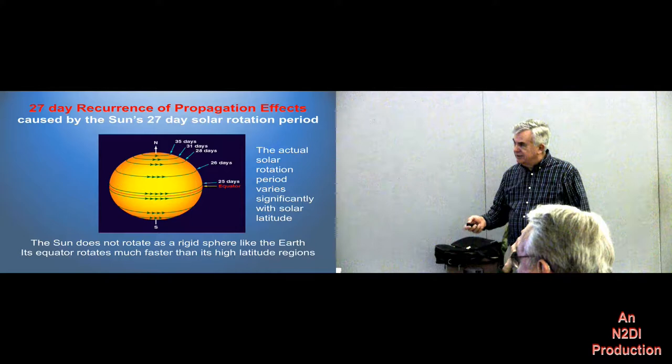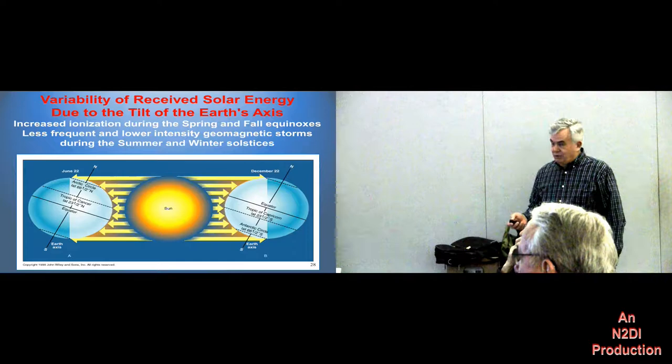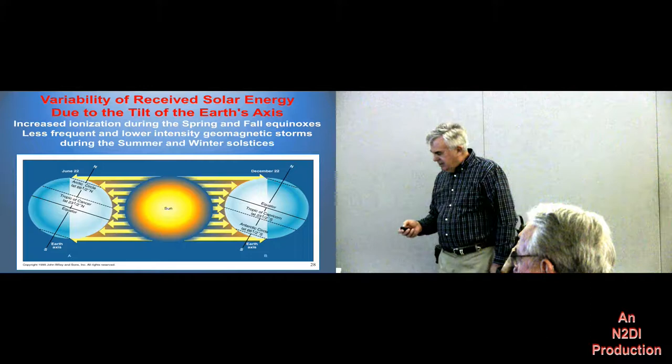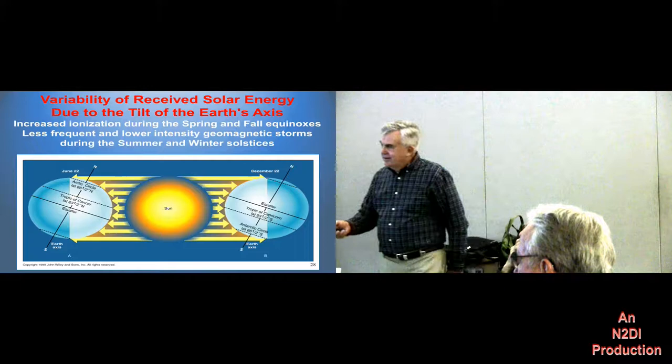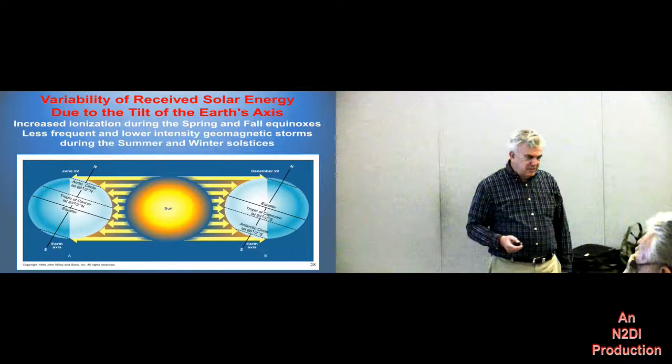And remember, the earth is tilted a lot, so there are huge seasonal effects. Although there's no such thing as a seasonal effect on the sun, on the earth it makes a big difference. We all know that we're in the winter now, so we're facing away from the sun and we don't get as much energy.